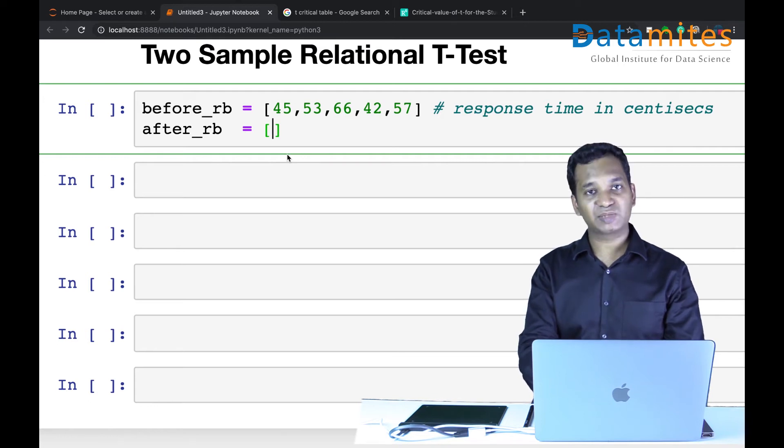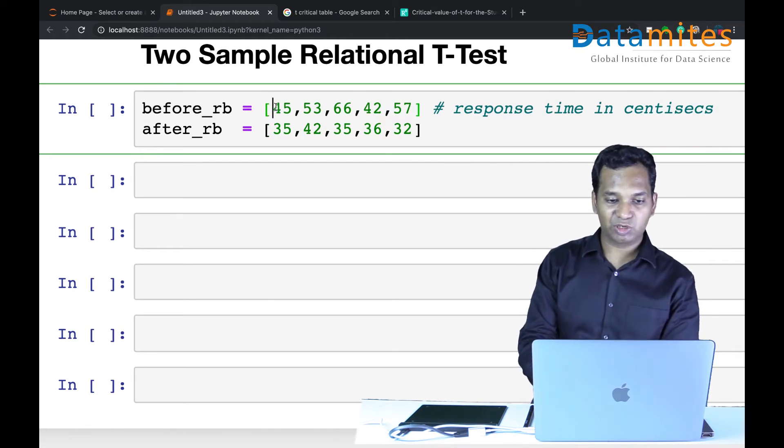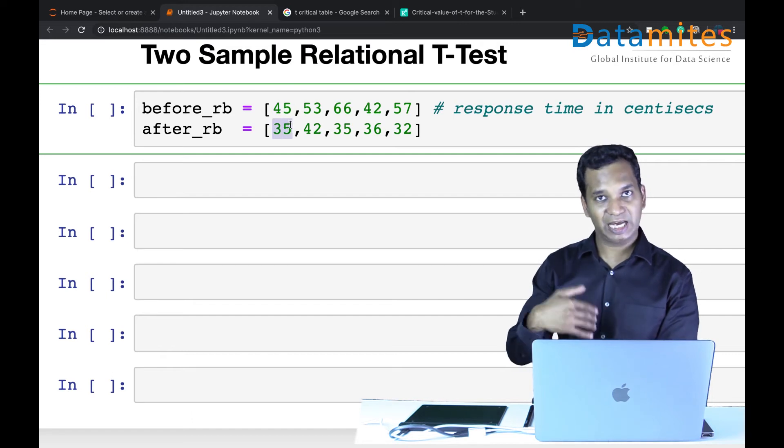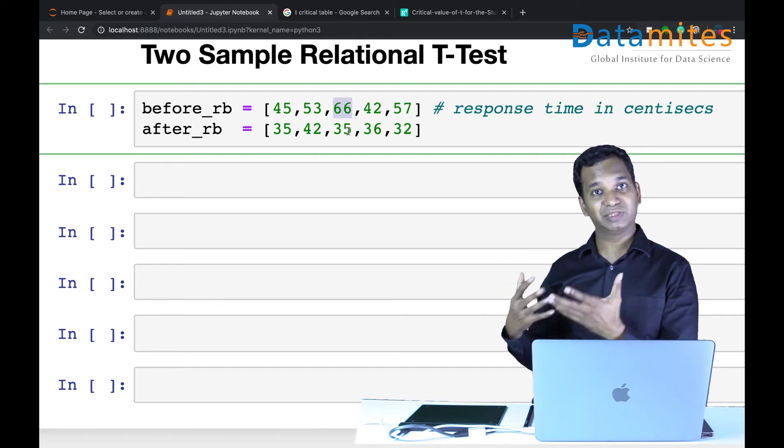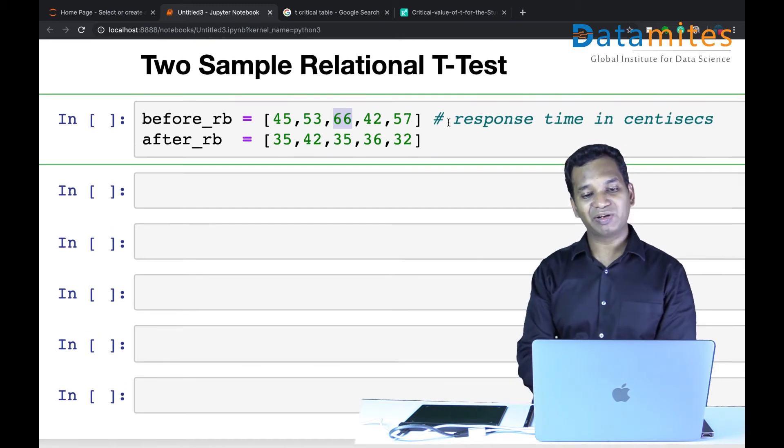The response time after Red Bull has reduced. Let's say 35. I'm just cooking the data up, so if you really do it you'll have real data and can do better predictions. These are the response times of the same five individuals. The same person who got 45 before has 35 after drinking Red Bull. 53 becomes 42, 66 is drastically reduced to 35, so Red Bull is acting much faster for the third person. It's called relational t-test because these two data are related.